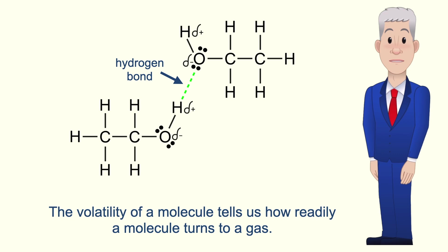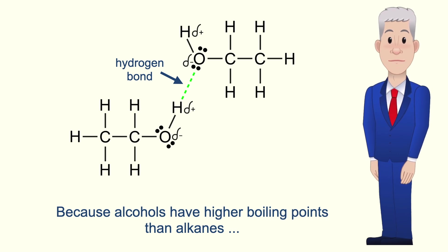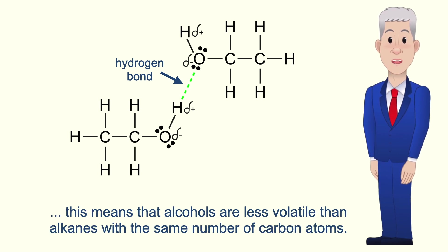The volatility of a molecule tells us how readily a molecule turns to a gas. Because alcohols have higher boiling points than alkanes, this means that alcohols are less volatile than alkanes with the same number of carbon atoms.